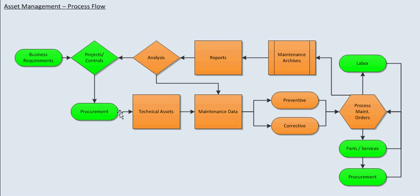Plant maintenance first starts with technical assets. Technical assets could be something like a ship, a plant, or a car. From the technical asset, you'll start creating all the data that goes with it. The technical asset itself is master data, and all the data that you need to support this technical asset throughout its life cycle is also master data. Examples would be materials needed to maintain it, bill of materials, preventive maintenance plans, task list, and work centers.